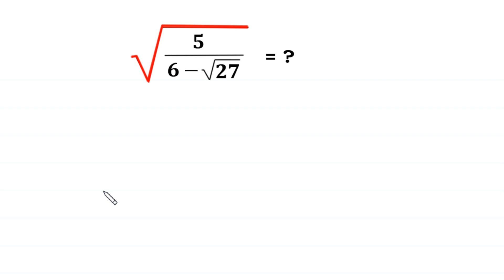Hello, welcome to how to solve this very nice square root algebra problem: square root of 5 divided by 6 minus square root of 27. So let's start.